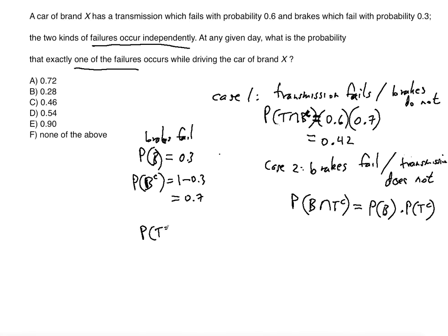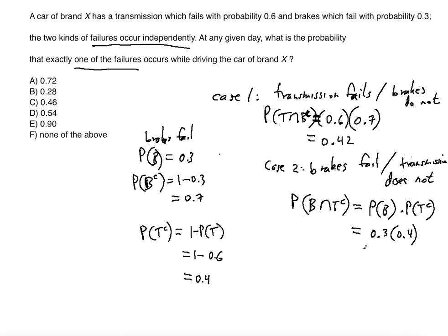P(B) is 0.3, and P(T complement) is found by subtracting P(T) from 1: 1 − 0.6 = 0.4. So the probability for Case 2 is 0.3 × 0.4 = 0.12.